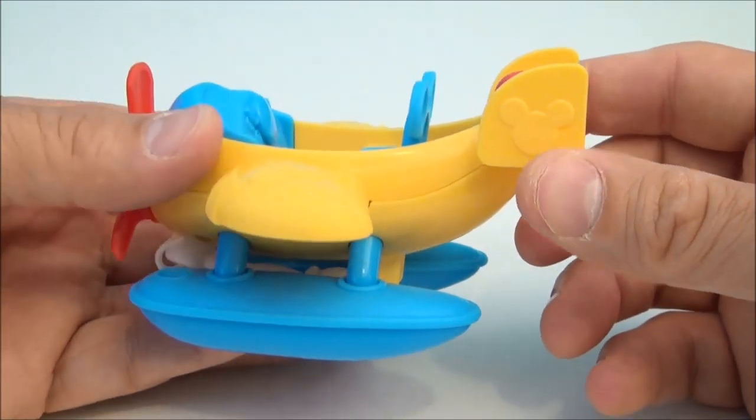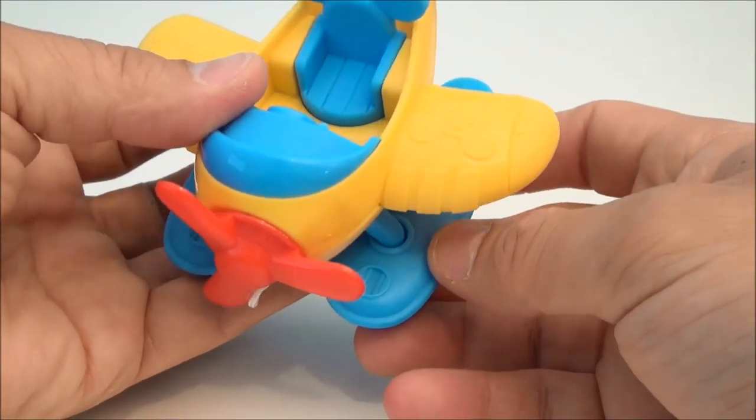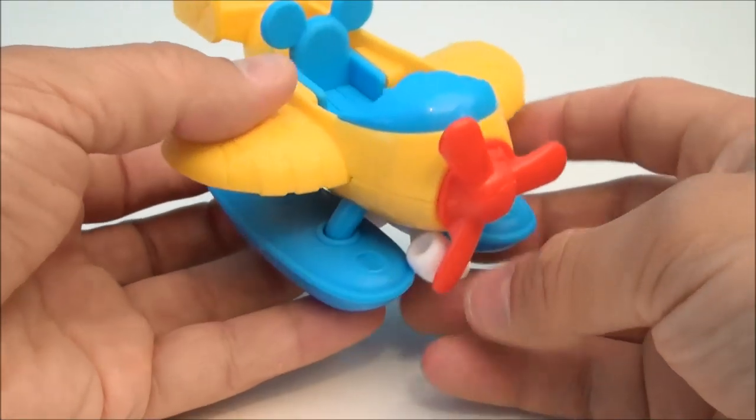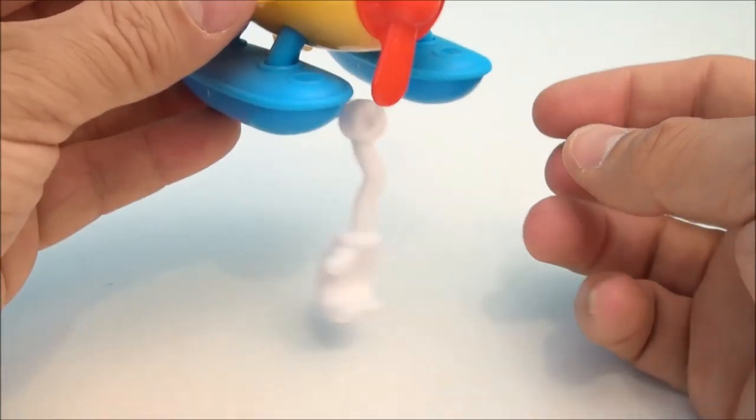You've got Mickey themed stuff, some pontoons. This thing lands in the water, it's for a water rescue. You've got a working propeller. Also, you've got this little tow line that hangs down.